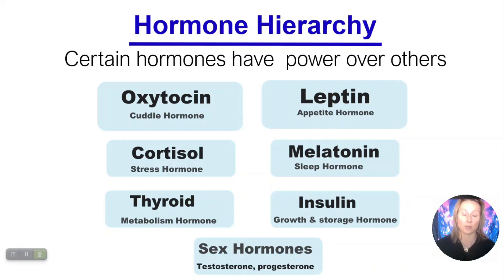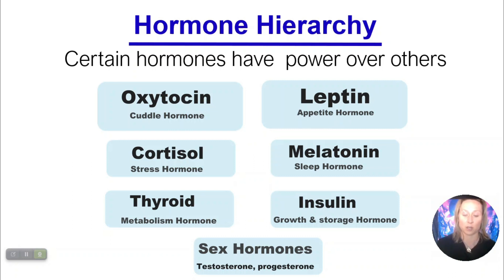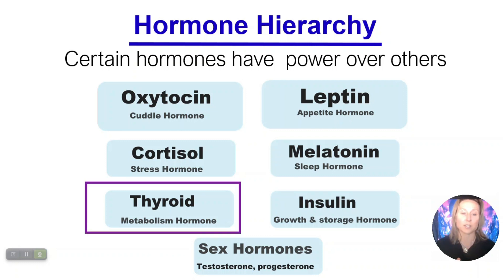Here we have a very simplified hormone hierarchy, just to demonstrate that certain hormones have power over others. Some of them are high up — like leptin has a lot of power over other hormones. What we can take home from here is that cortisol does have an influence over the thyroid. When you have too much cortisol, that's going to affect your thyroid hormone, and when you don't have enough cortisol, that's going to affect your thyroid hormones as well. You basically need the Goldilocks amount of cortisol, but it's not the only thing — it's one of many.